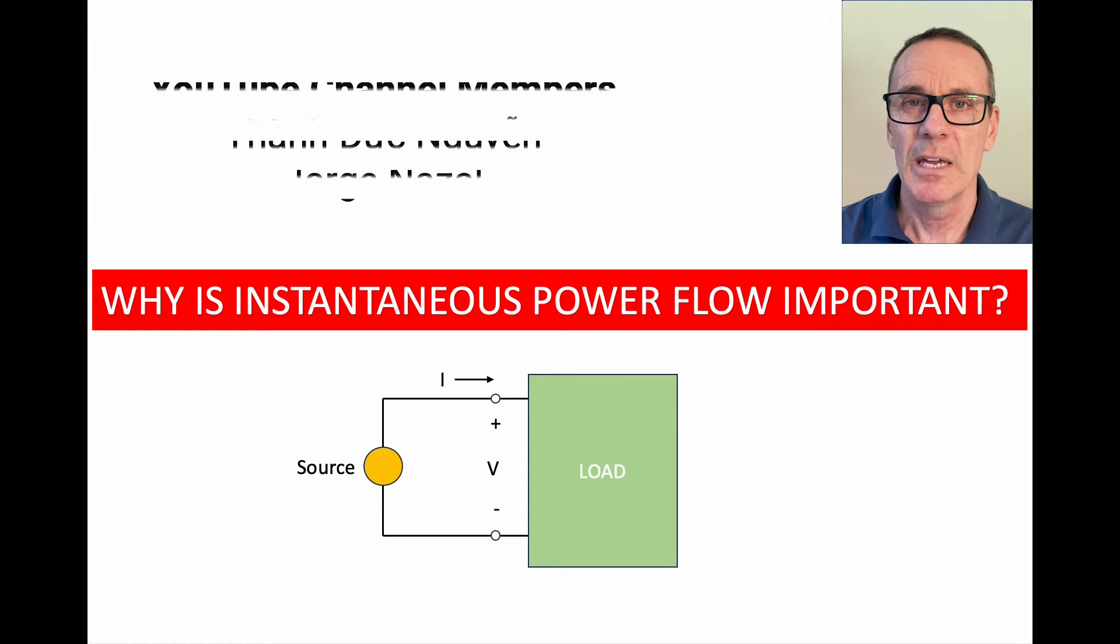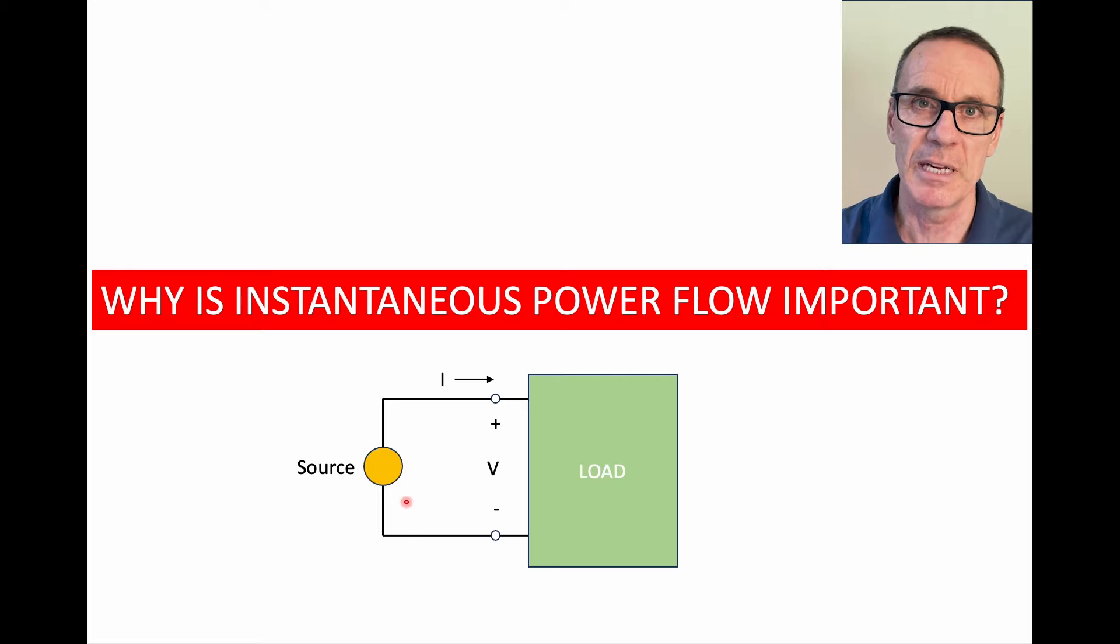So let's get into it. Here we've got a circuit which shows a source, might be a power supply, a socket in your house, and the current is flowing along a wire into the load. And the load might be a fridge, a washing machine, whatever you've got that's using AC, alternating current power. That's what we're talking about here.